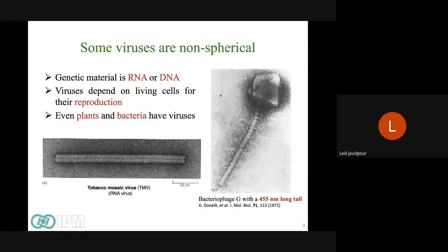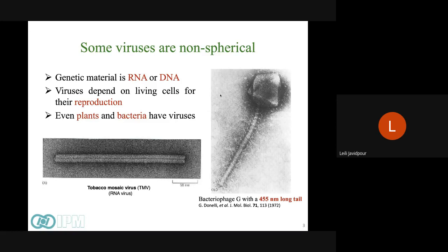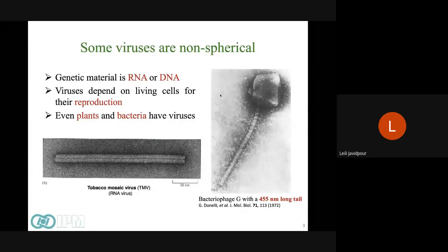But many of the viruses are non-spherical as well. For example, the first plant virus, which was the first virus discovered, was tobacco mosaic virus, which is a rod-like virus. Or some DNA bacteriophages, which means the virus is infecting bacteria. They also have a non-spherical shape, and some of them have very long tails. And all viruses depend on living cells for their reproduction.